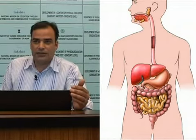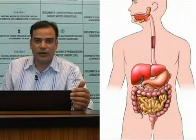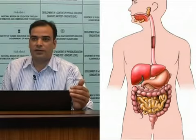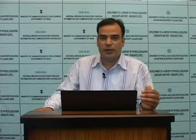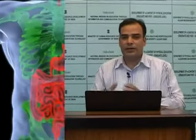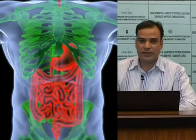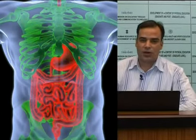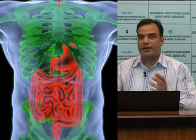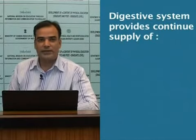For the digested food to be utilized by our body, it also has to reach our blood. The digestive system not only provides a route for the food to reach our body, but it also transports it to the blood. This passage of smaller molecules of food into the blood as well as into the lymph is called absorption. In a nutshell, the purpose of the digestive system is to provide us a continuous supply of nutrients, electrolytes, and water.